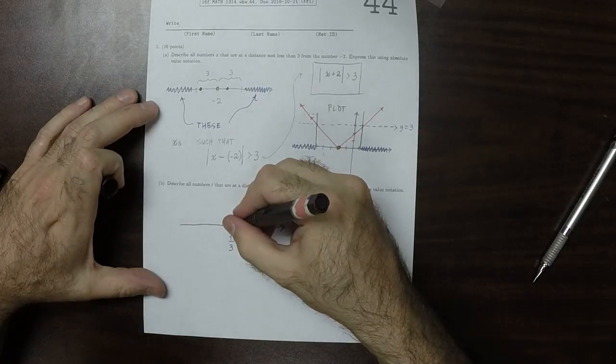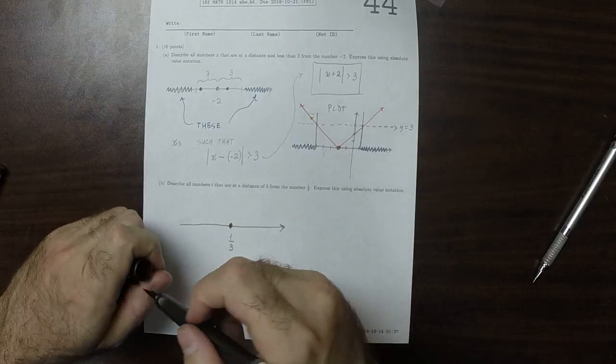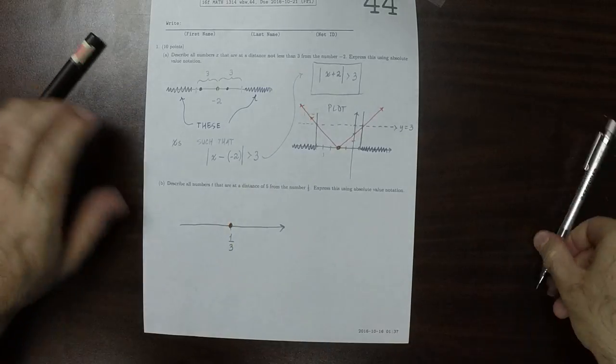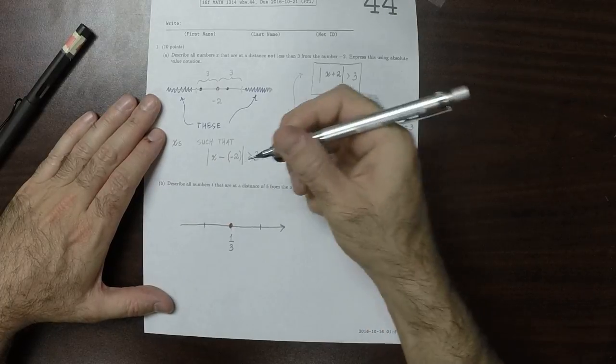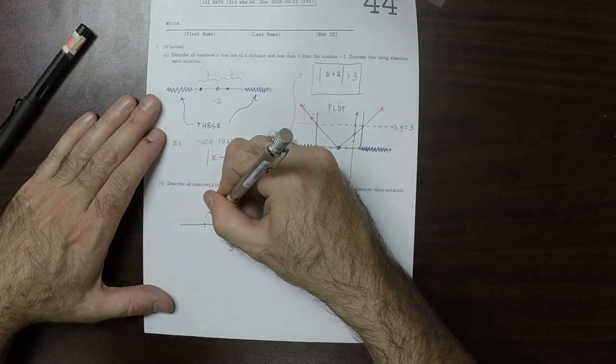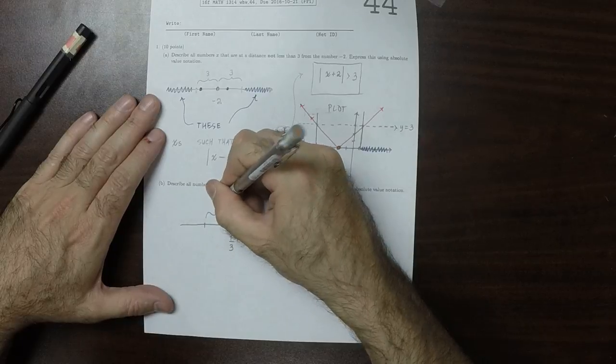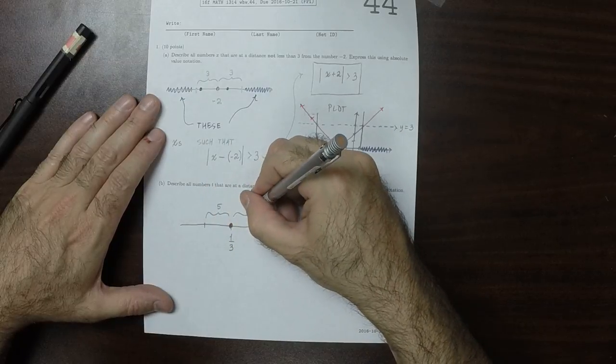So if I call this the red point. So here's a point and here's another point. And we want this distance to be 5, and we want this distance to be 5.